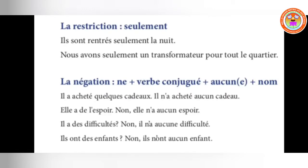How do you replace ne...pas? Before and after the verb — same for ne...aucun. The construction is ne...aucun (masculine) or ne...aucune (feminine), meaning none, not one, not any, or no. The only difference: ne...pas is written before and after the auxiliary verb, but ne...aucun can be written after the past participle.